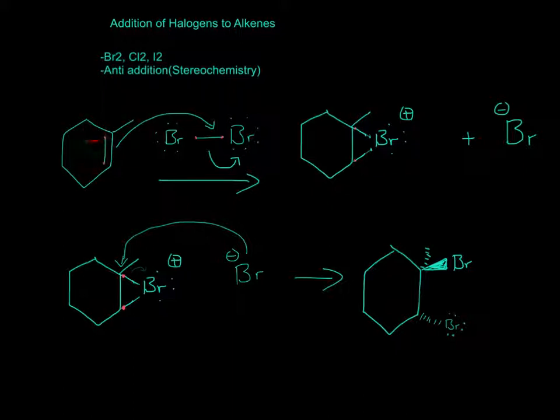So this double bond attacks this bond right here. Both of these two electrons go to this bromine and therefore become Br-, so this one becomes Br+, and it forms a bridge structure. Two bonds to the bromine, and that's why it's a plus charge here.